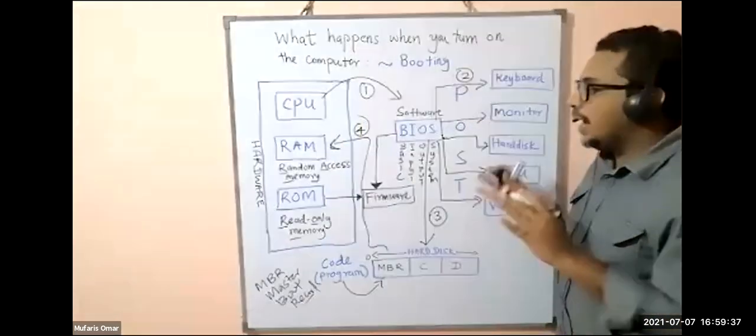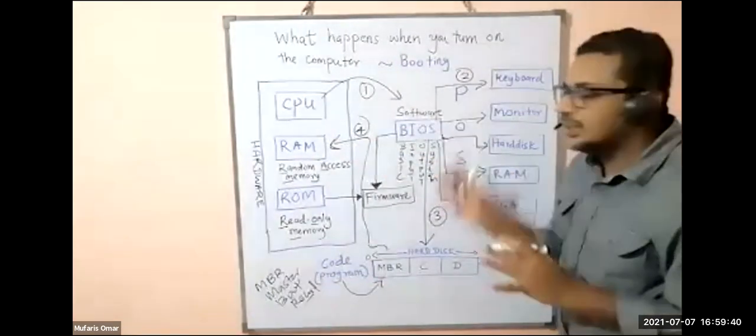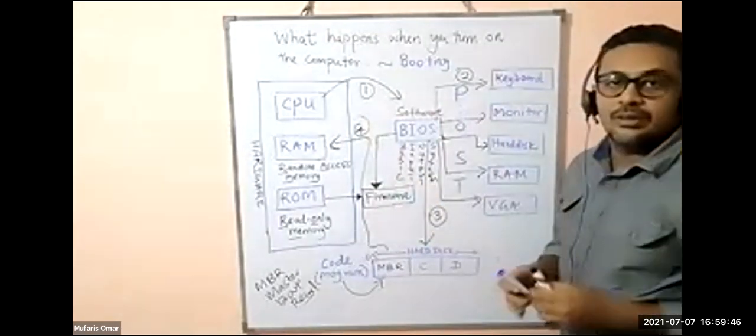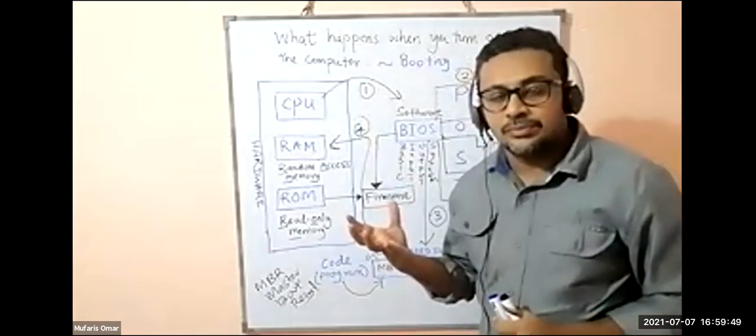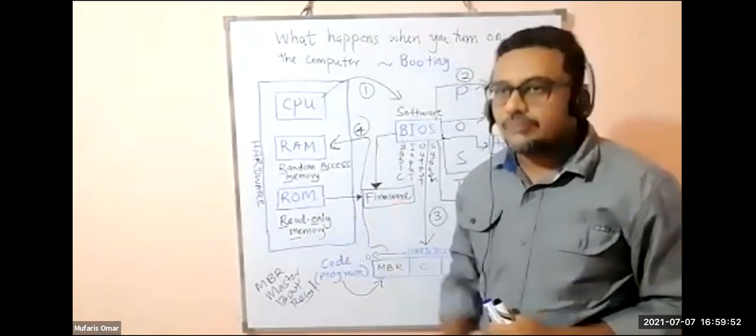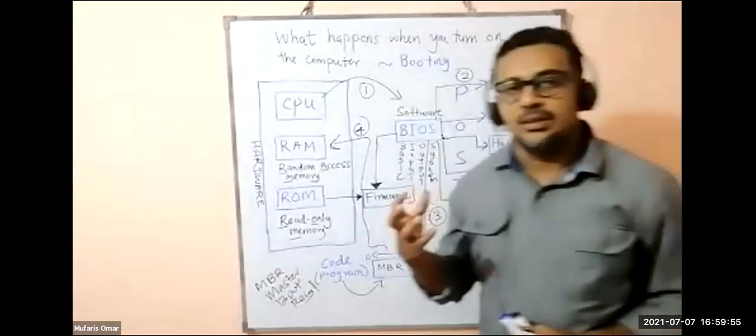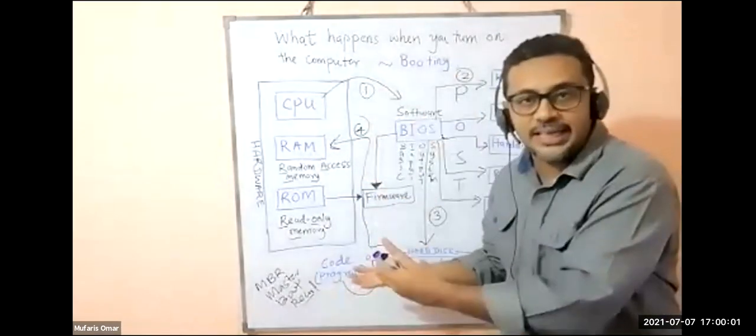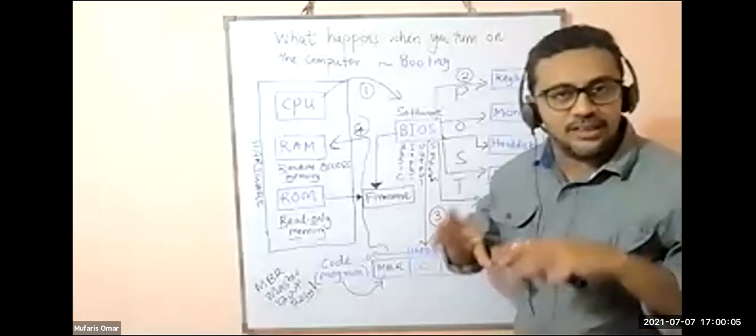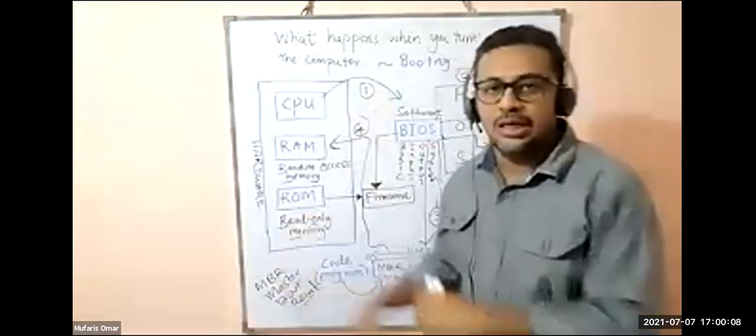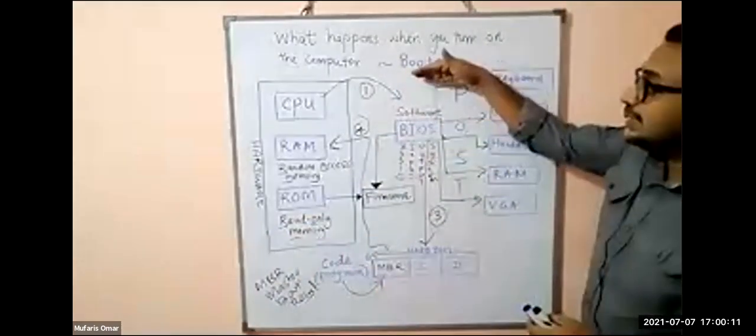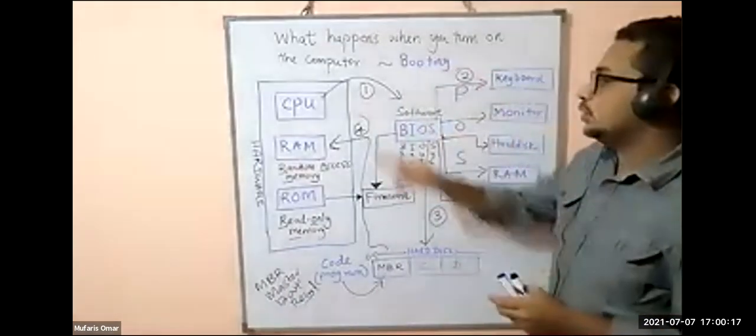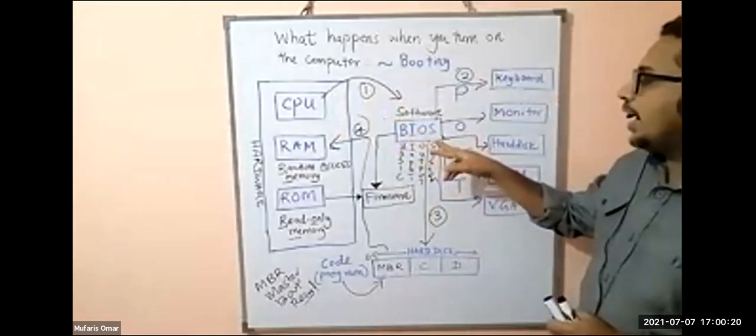BIOS completed all the four allocated things. These are the four things. Who is taking control now? Operating system. Very good. Maybe it's Windows or any other operating system. Now control is over to the operating system. You can see the blue screen, enter the password, and log into Windows or Linux. These steps are called booting.